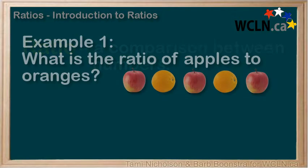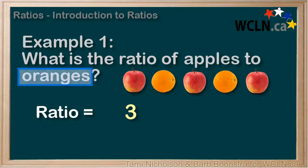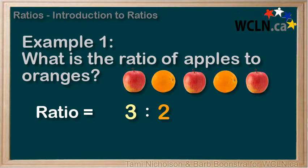what is the ratio of apples to oranges here? Apples are listed first, so we'll put the number of apples first. We have three apples. The oranges are second, so we'll put the number of oranges second. We have two oranges.